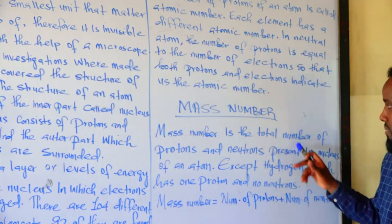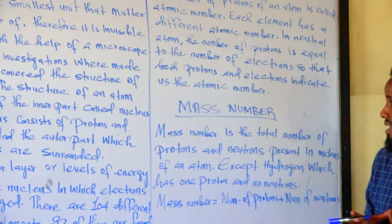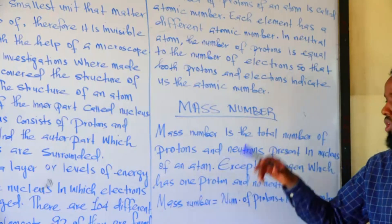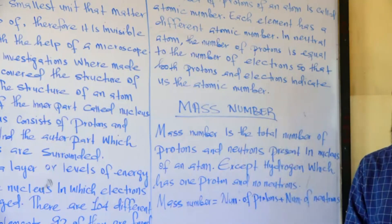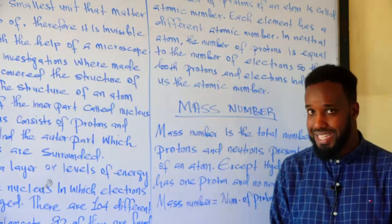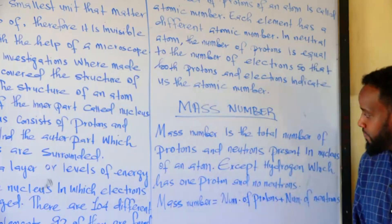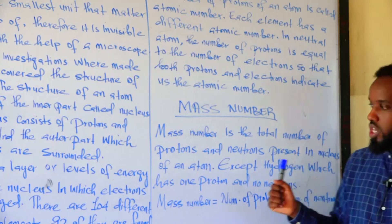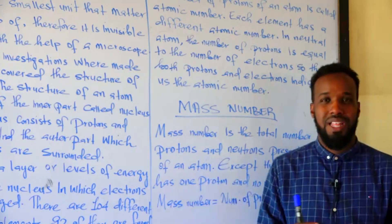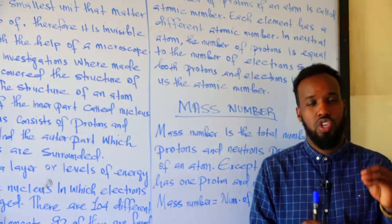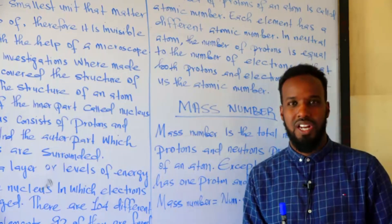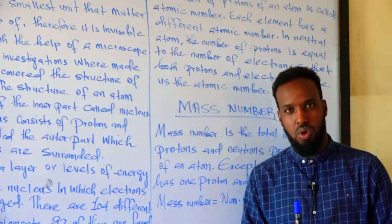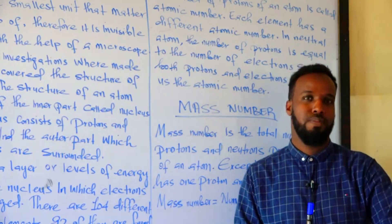The mass number of an atom is the total number of protons and neutrons.